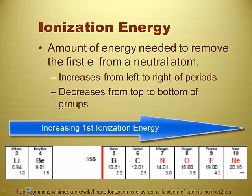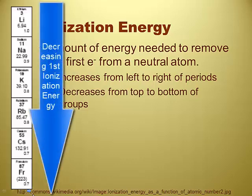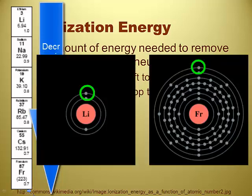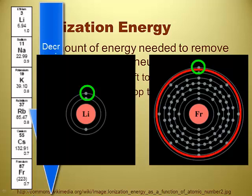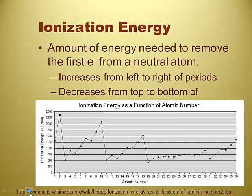That makes sense because it's something we've talked about before. Ionization energy decreases from top to bottom. So between lithium and francium, it's easier to take an electron away from francium. Don't forget they both have the same number of valence electrons — one — but francium has 86 core electrons shielding that one valence electron, whereas lithium only has two core electrons. That's not a lot of shielding. Here is a graph of it.